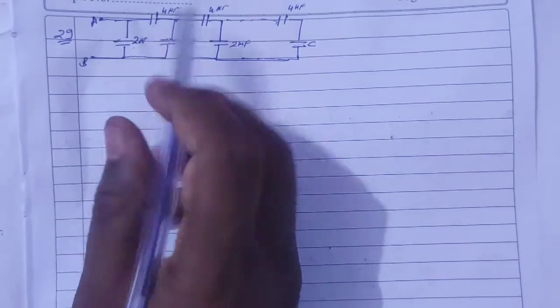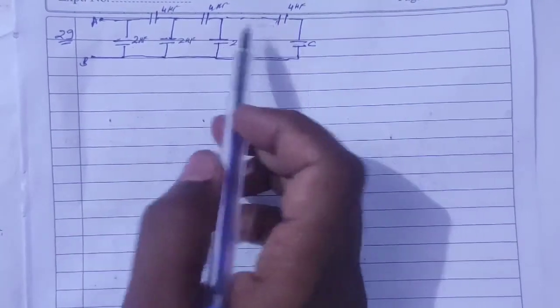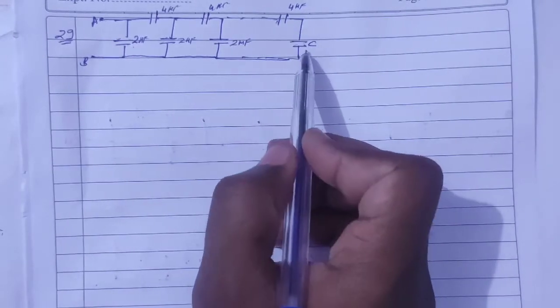So I have 2 microfarad and 6 microfarad. This is a combination, two combinations, and a lot of combinations. Last, C is added.